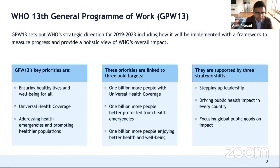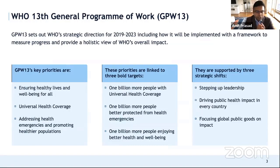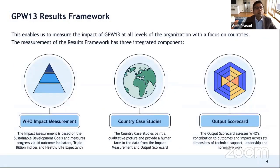Together these are called the triple billion targets. They are supported by strategic shifts including stepping up leadership and driving public health impact in every country. This is a key focus of GPW-13, focusing what WHO produces in terms of norms, standards, guidelines, and other normative information on impact — driven bottom up rather than provided from the top. The results framework helps us track progress in the impact we want to make, measuring the impact of GPW-13 with a focus on what's happening to people's health in countries.